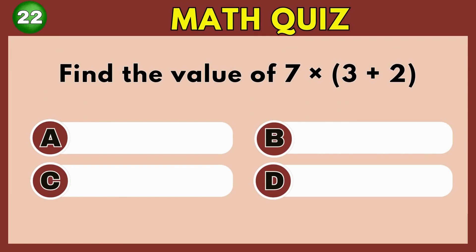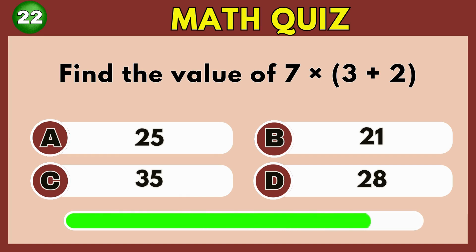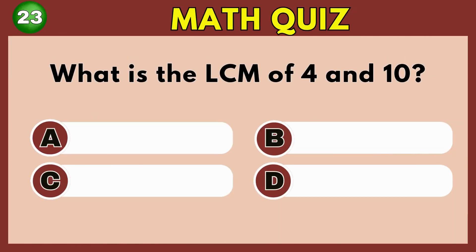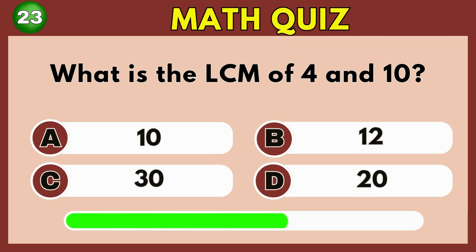What is 7 multiplied by the sum of 3 and 2? Option C. What is the least common multiple of 4 and 10? Option D. 20.